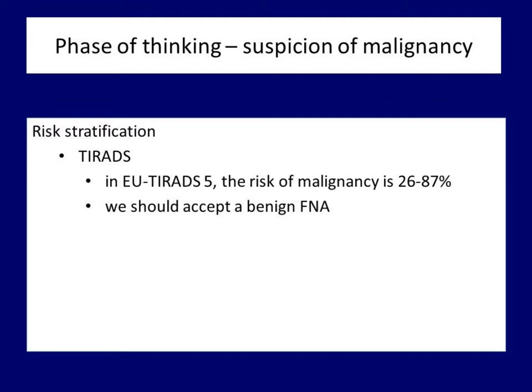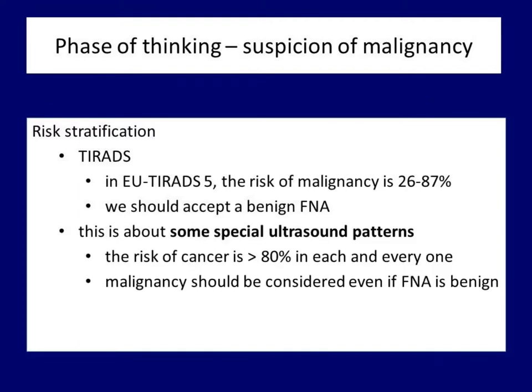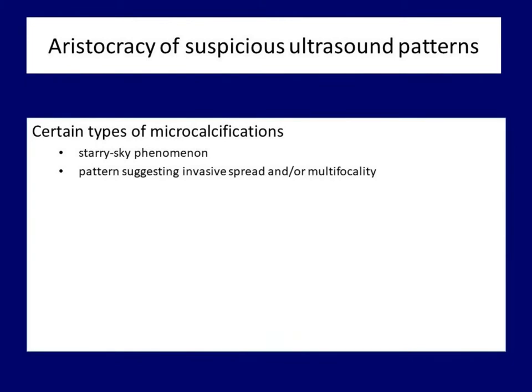The most suspicious TIRADS group 5 includes nodules with only a slightly higher risk of malignancy than an average nodule. It is clear that TIRADS is not a substitute for cytology. For most TIRADS 5 category nodules, it should be accepted if the cytology is negative, and for most TIRADS 5 category nodules, it is not acceptable to suggest surgery for an inconclusive cytology. However, there are some outstanding ultrasound patterns where we might want to think differently. I will talk about the aristocracy of suspicious characteristics. The first and most important pattern involves micro-calcifications, and two specific patterns are worth mentioning: the so-called starry sky phenomenon and the ultrasound presentation suggestive of invasive spread.